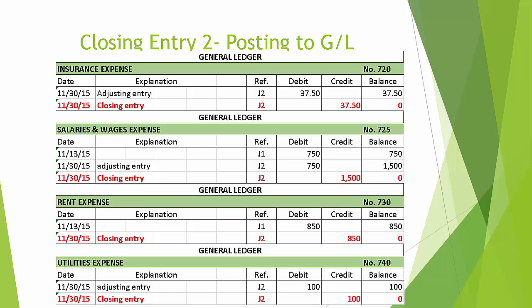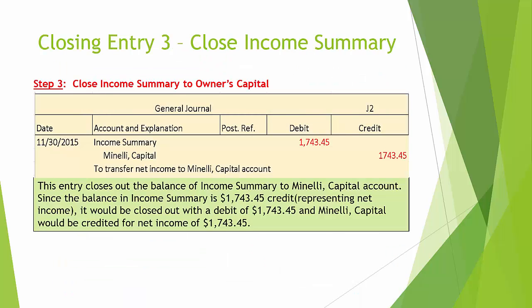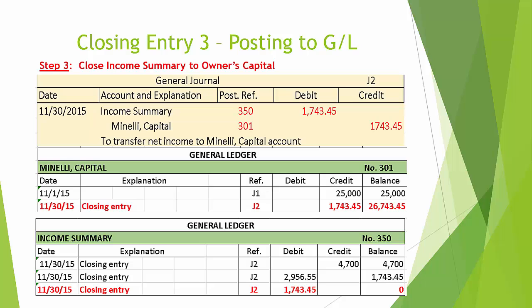Here is the closing entry to close income summary to owner's capital before posting. After posting, notice that the posting reference column now contains the general ledger account number to which the debit and credit has been posted. Also below the general journal entry, you see the corresponding general ledger pages. Notice there was a credit to Minnelli Capital of $1,743.45, bringing the ending balance up to $26,743.45. In the income summary account, we are debiting $1,743.45, resulting in a zero balance in income summary.